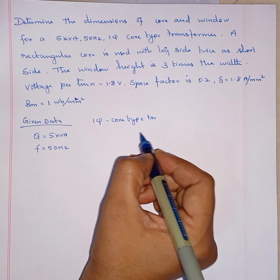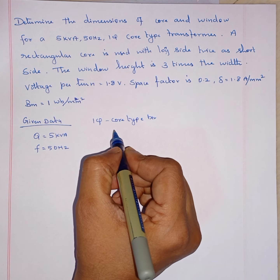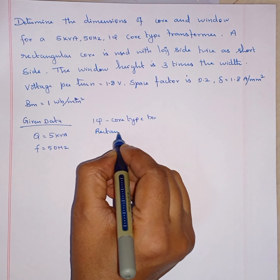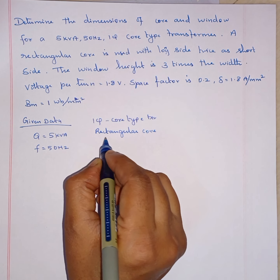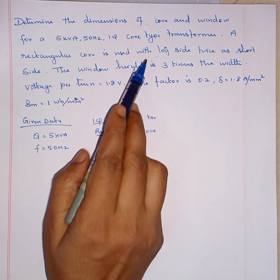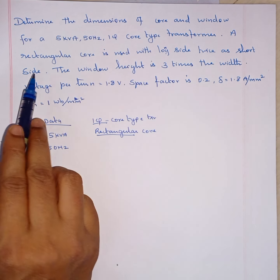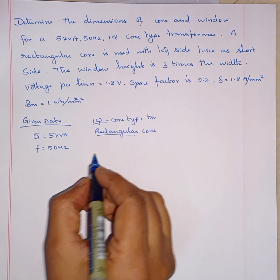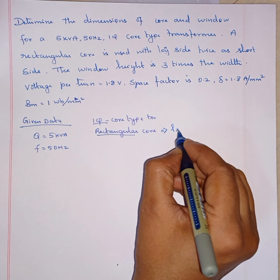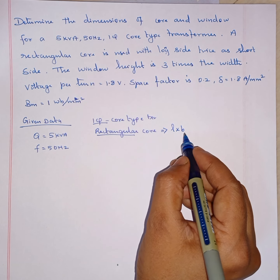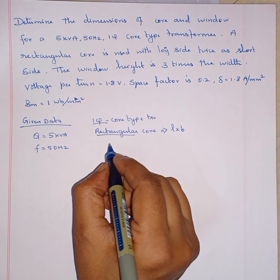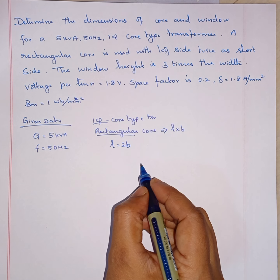These things are very important — whether it is a single phase or three phase, you have to check it out. And then rectangular core is used here. This is also a very important keyword: single phase and rectangular core type. It is used with long side twice as short side. So for the rectangular core, its area is L into B, and length is twice the breadth. So we can write L is equal to 2B. That is given data.